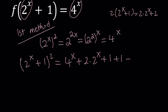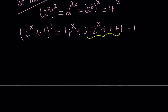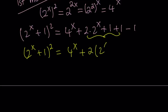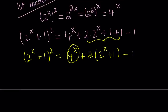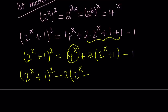We're going to add 1 and subtract 1 — since 1 minus 1 equals 0, this should work. Now this part is going to give us what we want, so let's rewrite it: 2 to the power x plus 1, quantity squared, equals 4 to the power x plus 2 times 2 to the power x plus 1 minus 1. Now we're going to put everything except for 4 to the power x on the left hand side to isolate it. So we get: 2 to the power x plus 1, quantity squared, minus 2 times 2 to the power x plus 1, plus 1, equals 4 to the power x.